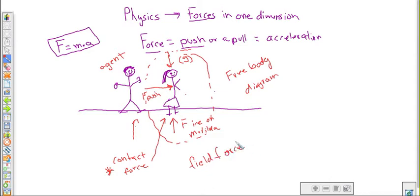Gravity is known as a field force. A field force is anything that causes acceleration without physically touching. So gravity, magnetism, things like that. Those are going to be our two main field forces. Electricity is going to come into play there as well.